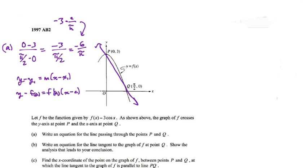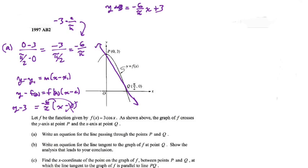I plug in my slope, negative six over pi, and I'll use the point (0, 3) because it looks cleaner. So y minus three equals negative six over pi times x. When I distribute and multiply by zero, it doesn't change anything, so I add three and get y equals negative six over pi times x plus three. I could have left it in point-slope form — that's still a valid equation of a line — but for multiple choice you'd want y isolated.